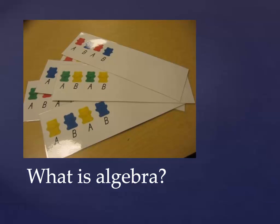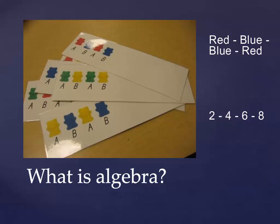What is algebra and what does it look like at the K-2 grade band? Algebra refers to number patterns and relationships. Early experiences can include students describing simple patterns like red, blue, blue, red, or two, four, six, eight. Helping students understand and experience patterns is building a foundation for understanding functions.